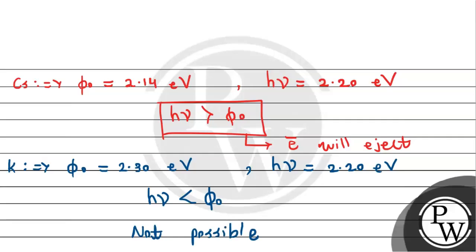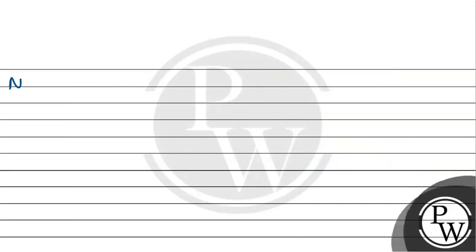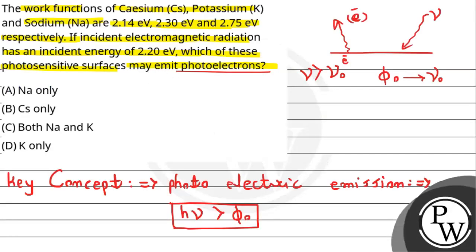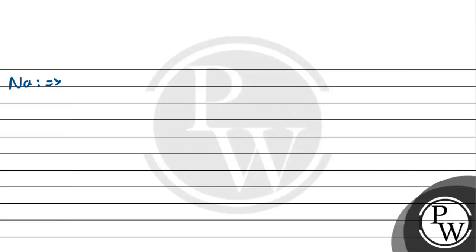This totally violates Einstein's photoelectric effect. That is why photoelectric emission is not possible for potassium.